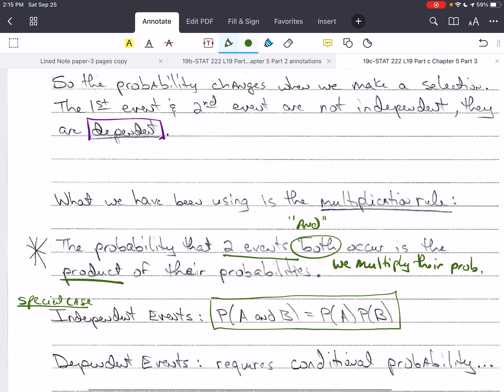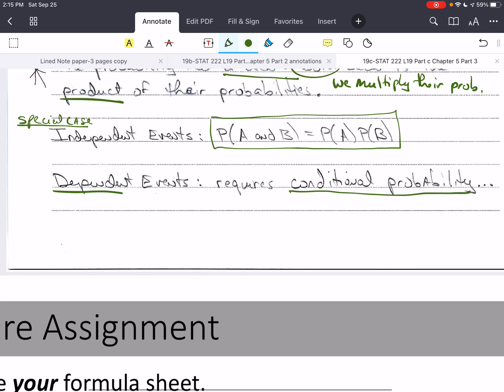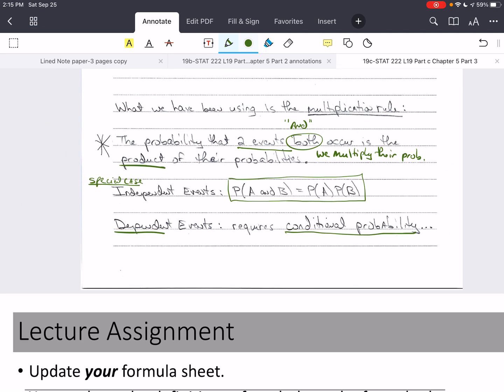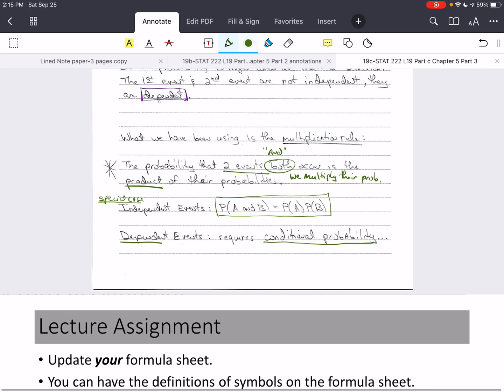But we need something for dependent events. So, this brings us to something called conditional probability. We will pick up here in the next video. This is a good stopping point. We've gone over the multiplication rule for independent events. In the next video, we'll discuss conditional probability and how it relates to dependent events.